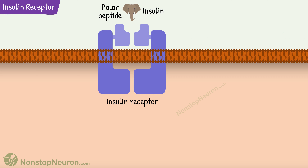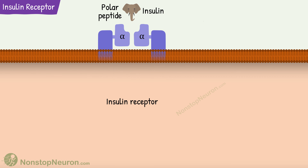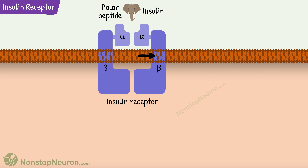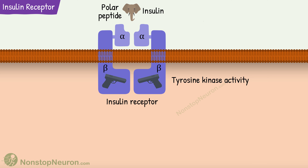The insulin receptor is a heterotetramer. It has two identical alpha chains that are entirely outside the cell, and two identical beta chains that have extracellular, transmembrane, as well as intracellular portions. The intracellular domain of the beta chain possesses tyrosine kinase activity. Thus, the insulin receptors are an example of catalytic receptors.